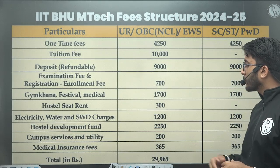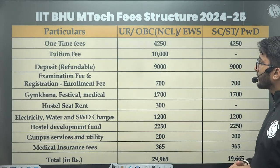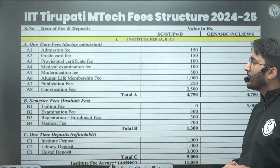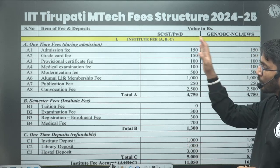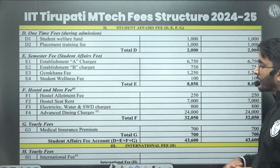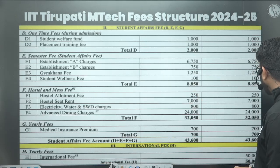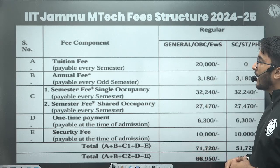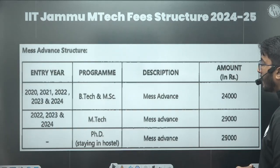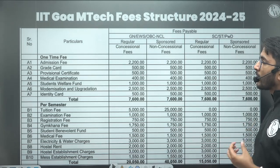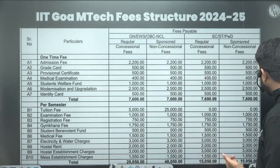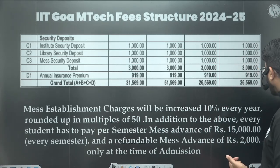For IIT BHU, the total fees is ₹29,965 for General, OBC-NCL, and EWS, and ₹19,665 for SC, ST, and PWD. For IIT Tirupati, all charges are available — it is also one of the new IITs so fees are decided accordingly. IIT Jammu fees details are also available here. IIT Goa is also one of the new IITs and all fees structures are attached here, so you can take reference and pay accordingly.